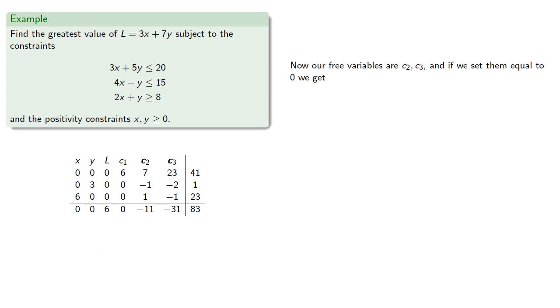Now our free variables are c2 and c3, and if we set them equal to 0, we get a feasible solution. And it's important to keep in mind that this will be our starting point. We have to begin at a basic feasible solution.